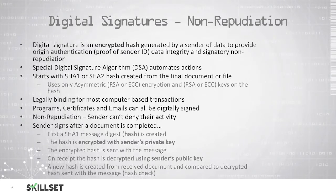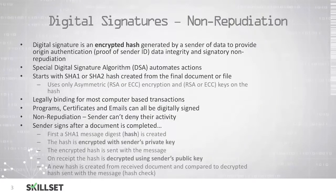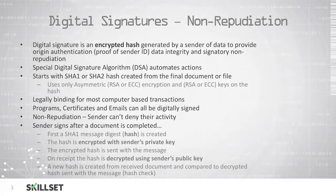We use a digital signature algorithm, or DSA, to automate this process. This process begins with a SHA-1 or SHA-2 hash created from any documents or files that are being sent, and this uses asymmetric encryption, either RSA or ECC. Only the hash of the file is encrypted, not necessarily the data itself, so this is designed for non-repudiation, not necessarily for confidentiality. This is legally binding for most computer-based transactions, and we can sign all sorts of data like certificates, programs, and email messages. The sender is not able to deny their activity unless they can prove that someone was able to get access to their secure private key.